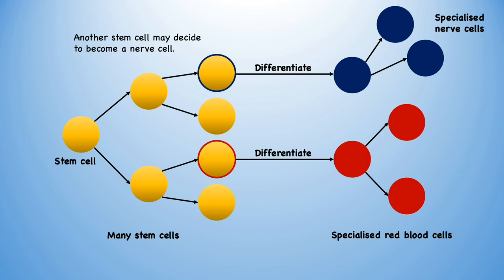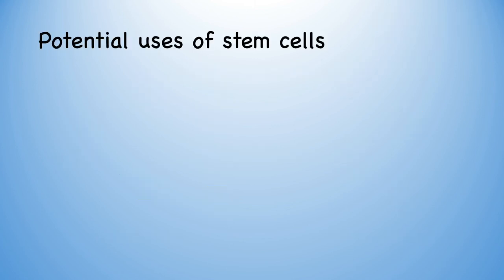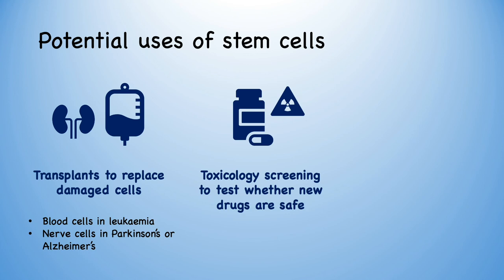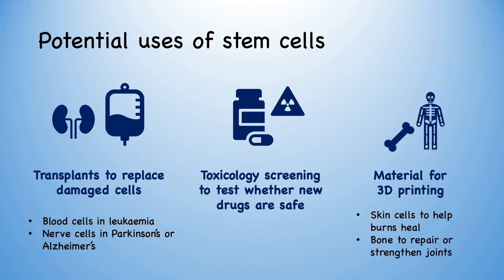Stem cells have particularly useful medical applications. Firstly, they can be used to replace damaged cells, such as blood cells in leukaemia or nerve cells in neurodegenerative diseases. They can also be used to test new drugs in the lab to ensure that they're safe for use in humans, instead of animal testing. And finally, they can be used to produce 3D structures such as skin to help burns heal, or instead of titanium in joints.